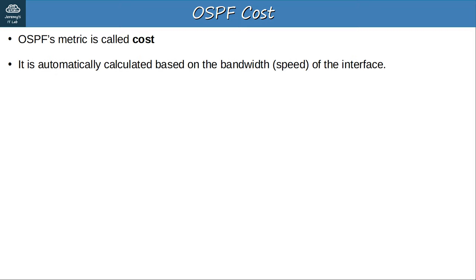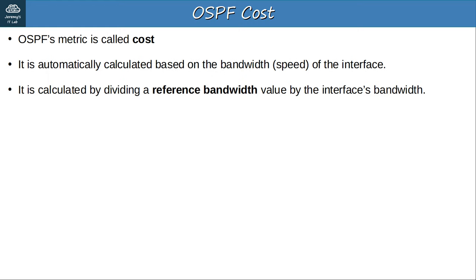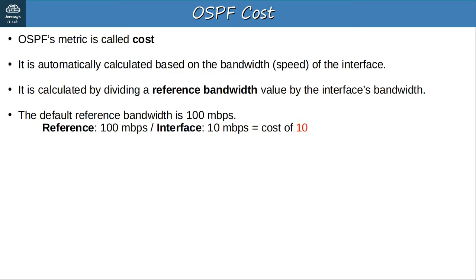Let's talk about OSPF's metric. As you already know, OSPF's metric is called cost. It is automatically calculated based on the bandwidth, which is basically the speed, of the interface. You can also manually configure the cost of each interface. The interface's cost is calculated by dividing a value called the reference bandwidth by the interface's bandwidth. The default OSPF reference bandwidth is 100 megabits per second.